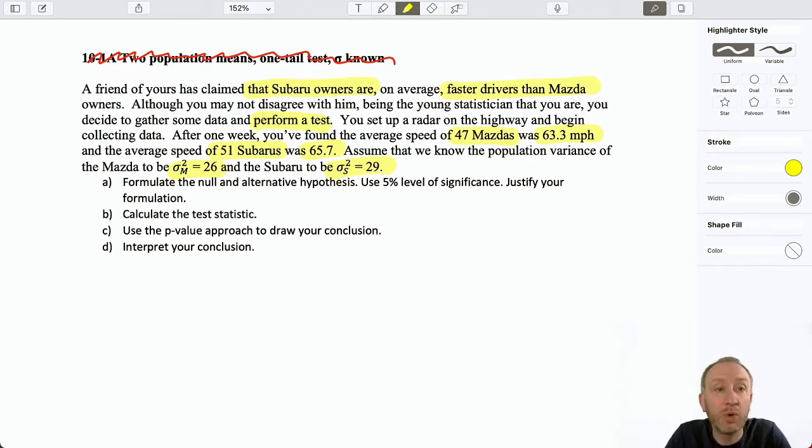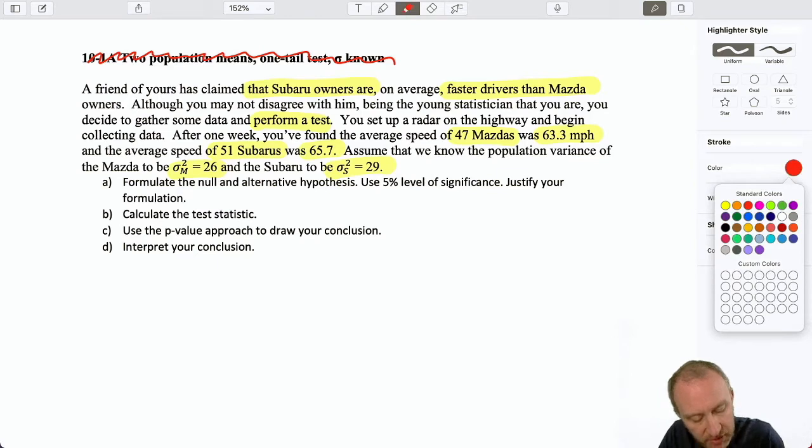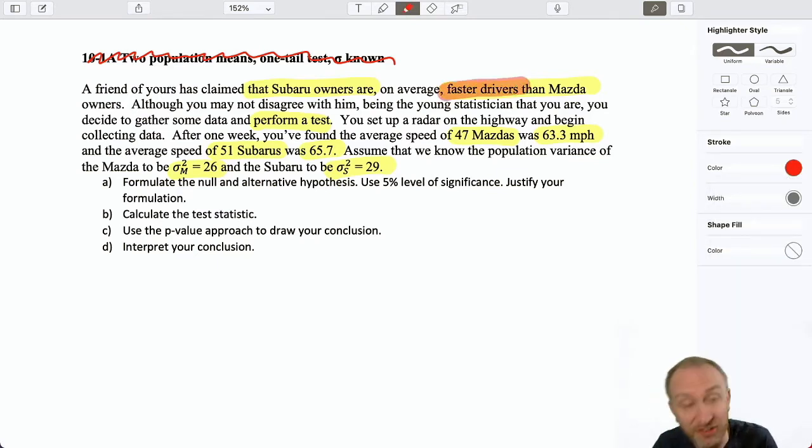We set up a radar on the highway and begin collecting data. After a week we found the average speed of 47 Mazdas. Their average was 63.3 miles per hour. And 51 Subarus was 65.7, also miles per hour. We know the population variance was 26 for the Mazdas, 29 for the Subarus. So how do we know what kind of test we're supposed to be doing here? All the clues are here.